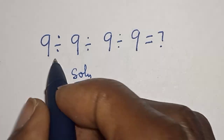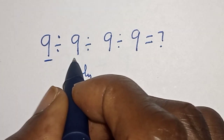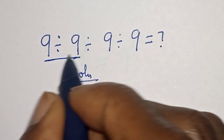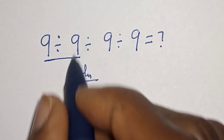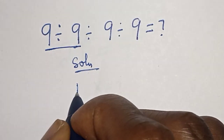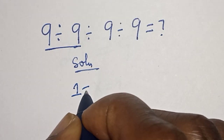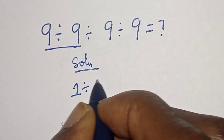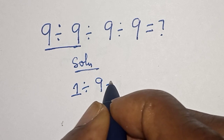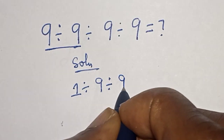Now, let's work with this first tool. 9 divided by 9 is 1, divided by 9, divided by 9.